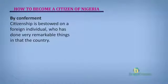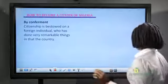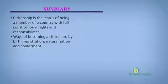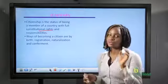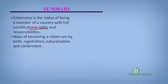Having known who a citizen is, what citizenship is, and how to become a citizen, we are going to do a brief recap of all we have learned. First, we said citizenship is the status of being a member of a country with full constitutional rights. Once a person is a citizen, they are entitled to all the rights embedded in the constitution. And also, you don't get those rights alone — you are also accountable to certain duties and responsibilities as a Nigerian in the country.